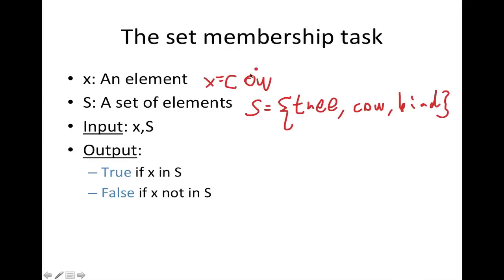So is the element cow in the set tree, cow, bird? Of course it's obvious in this case that the answer is true, and if it was not in the set we would want it to answer false. But we want to do it in some very efficient way.